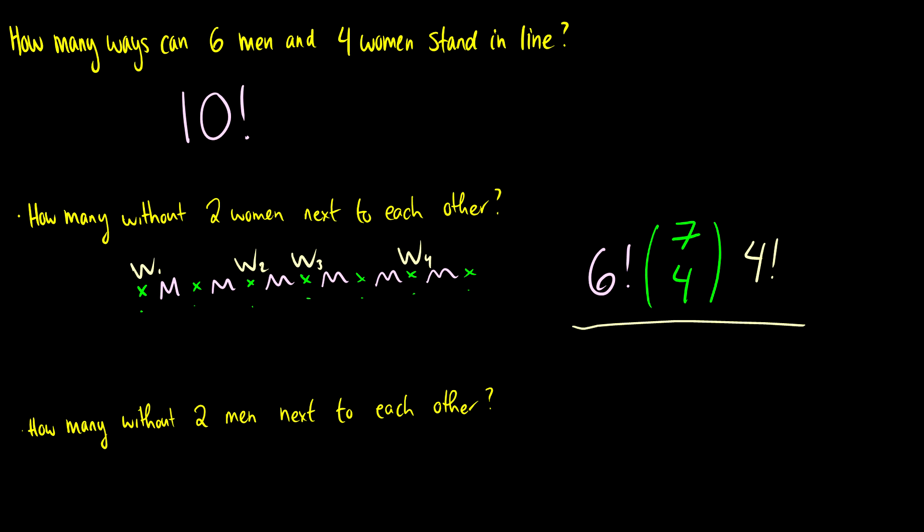Okay, so third question. How many ways without two men next to each other? Well, this is impossible. So there's going to be zero ways for this to happen.